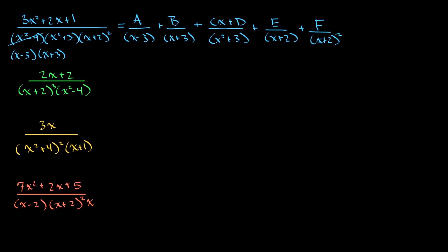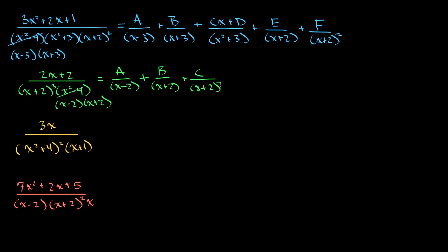Now let's move on to the one in green. We can factor out a two from the numerator, but that doesn't help with canceling anything. In the denominator we again have a difference of squares, which reduces to (x minus 2)(x plus 2). Now we have repeating linear factors — and it's x plus 2 to the fourth power. So the setup is: A over (x minus 2), then B over (x plus 2), plus C over (x plus 2) squared, plus D over (x plus 2) cubed, plus E over (x plus 2) to the fourth power.